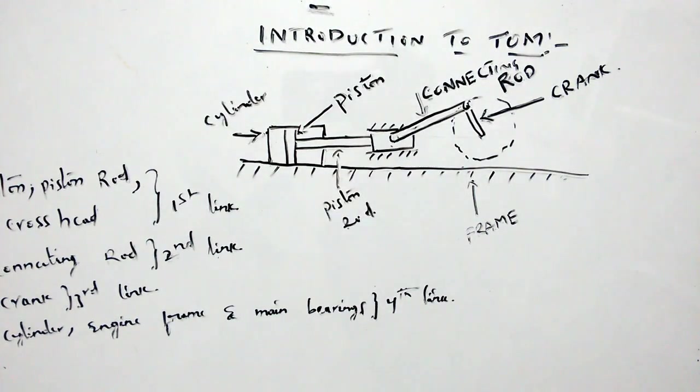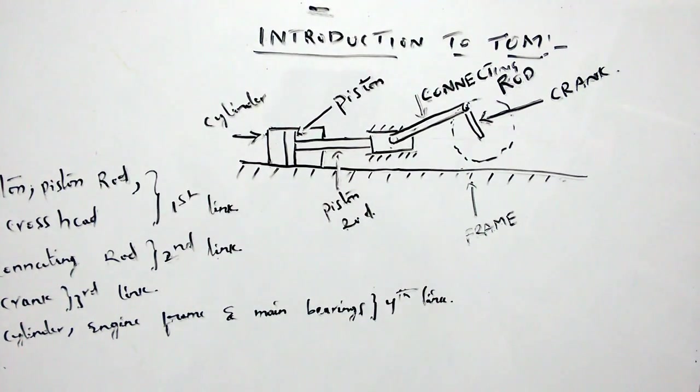In this video, I am going to discuss the introduction to machines and the definition of a kinematic element. Theory of machines is a subject that deals with the analysis of different machines. A machine is a device that can transform one form of energy into useful work.